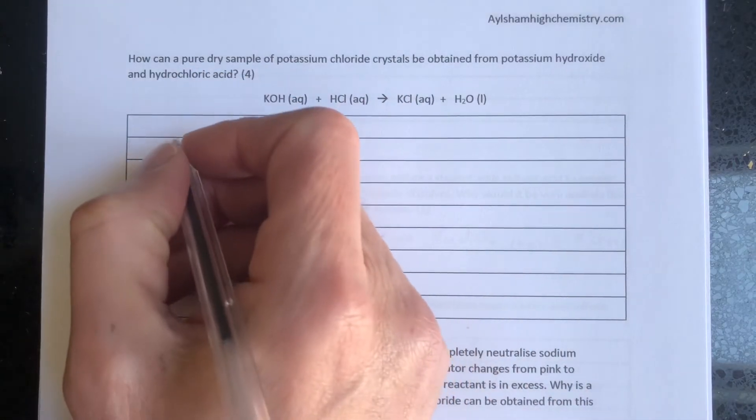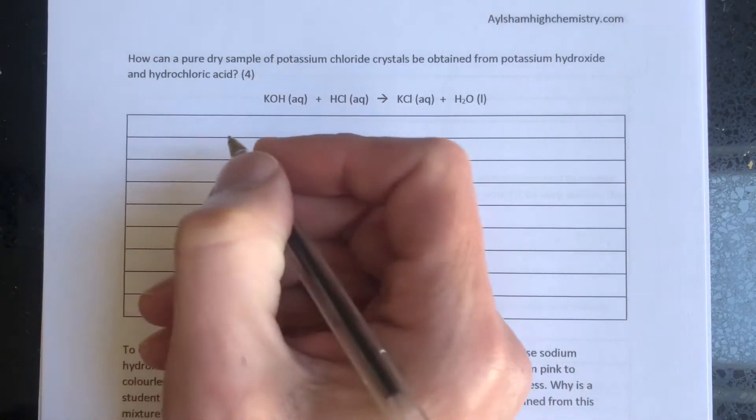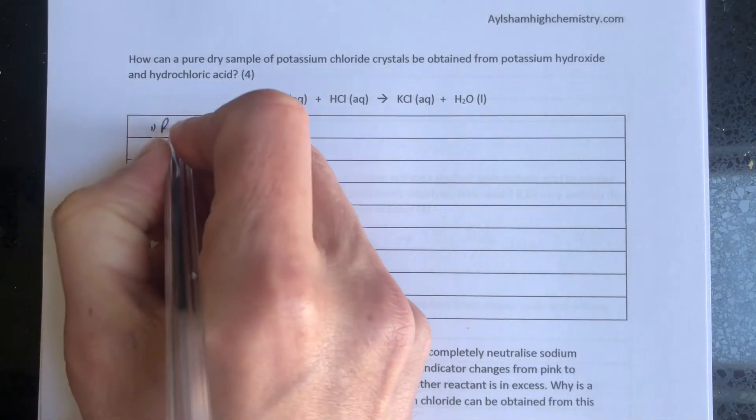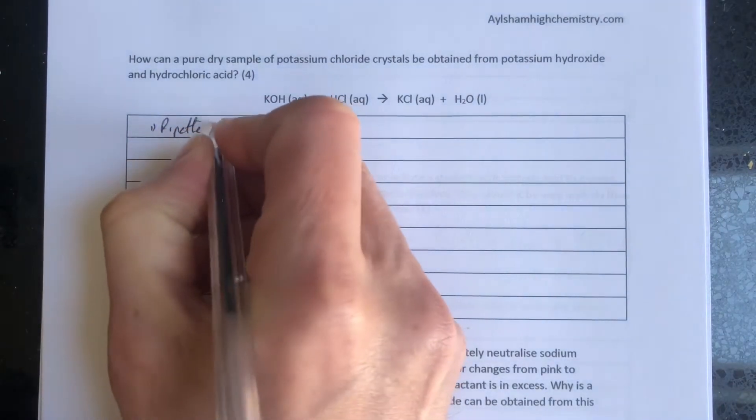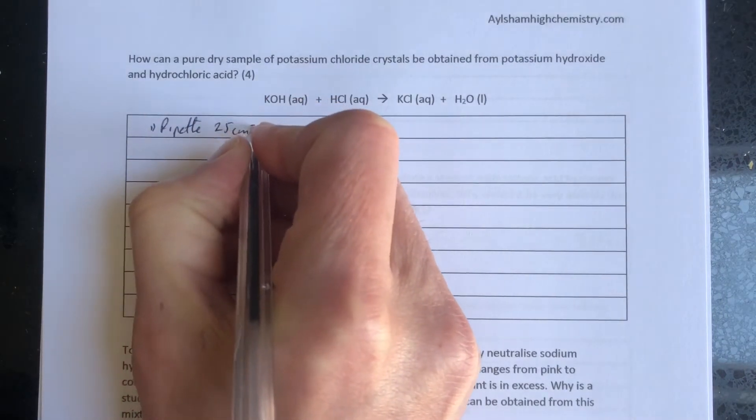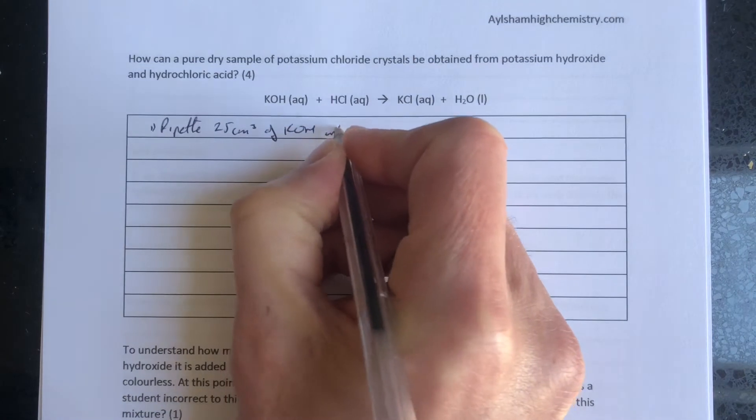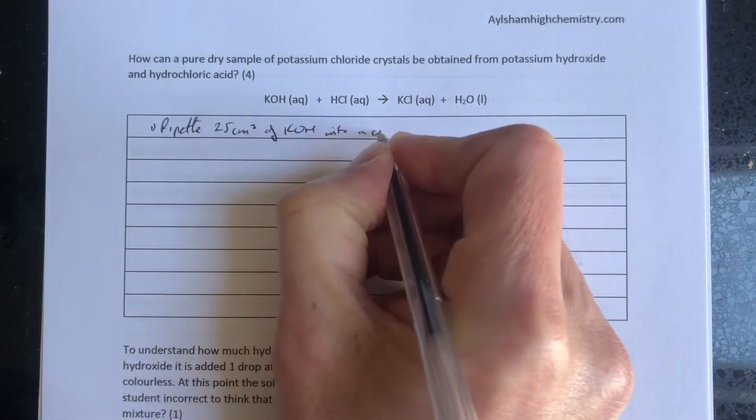To do this, we're going to need volumetric analysis equipment. Step one: pipette 25 centimeter cubes of KOH, the potassium hydroxide, into a conical flask.